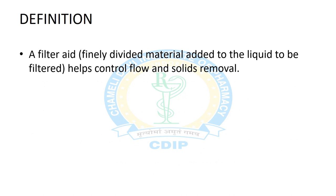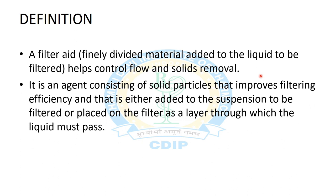First, the definition: a filter aid is a finely divided material which, when added to the liquid to be filtered, helps control flow and solid removal. For easy filtration, these filter aids are added into the liquid so it will help for better flow control and solid removal.